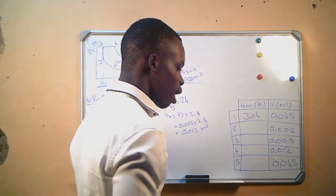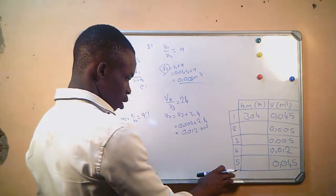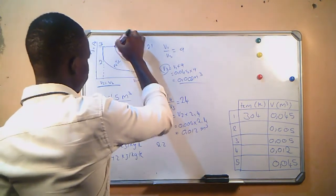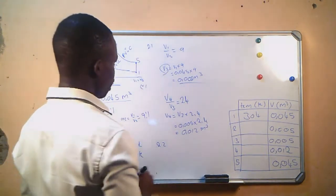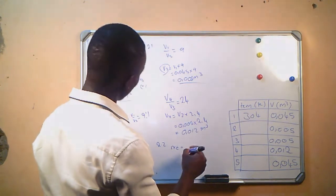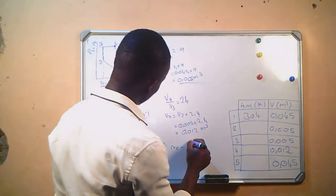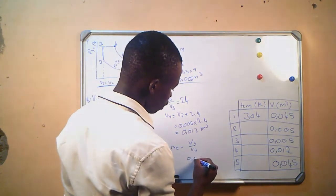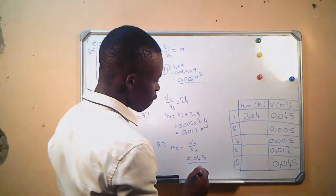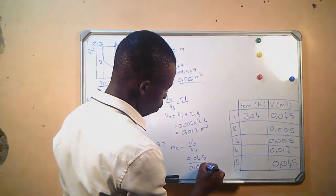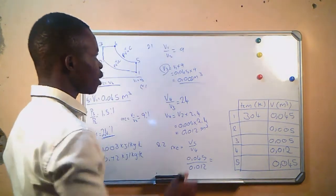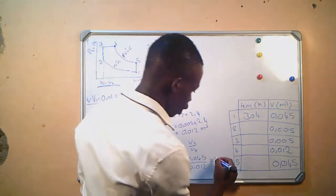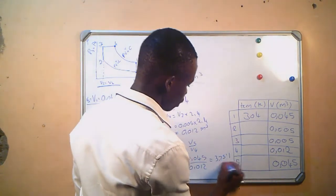Question number 2: adiabatic volumetric expansion ratio. Expansion takes place from 4 to 5. The expansion ratio equals V5 divided by V4, which is 0.045 divided by 0.012, giving us a volumetric expansion ratio of 3.75 to 1. This is our volumetric expansion ratio.